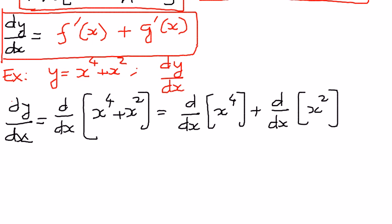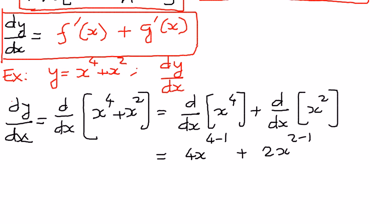And therefore, each one of them is in the form where we can apply the power rule. So we can write this out as follows: here n equals 4, therefore 4x to the power of 4 minus 1, plus, here n is equal to 2, therefore 2x to the power of 2 minus 1, applying the power rule.